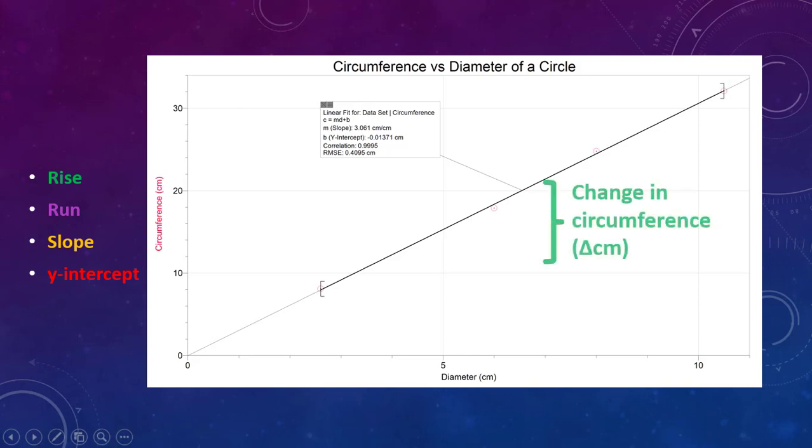So let's start with our rise. If we look on our graph, the rise is going to be on our y-axis, right? So that's how much our graph goes up. So from one point to another, there's a certain amount that our graph goes up. So we can identify this.